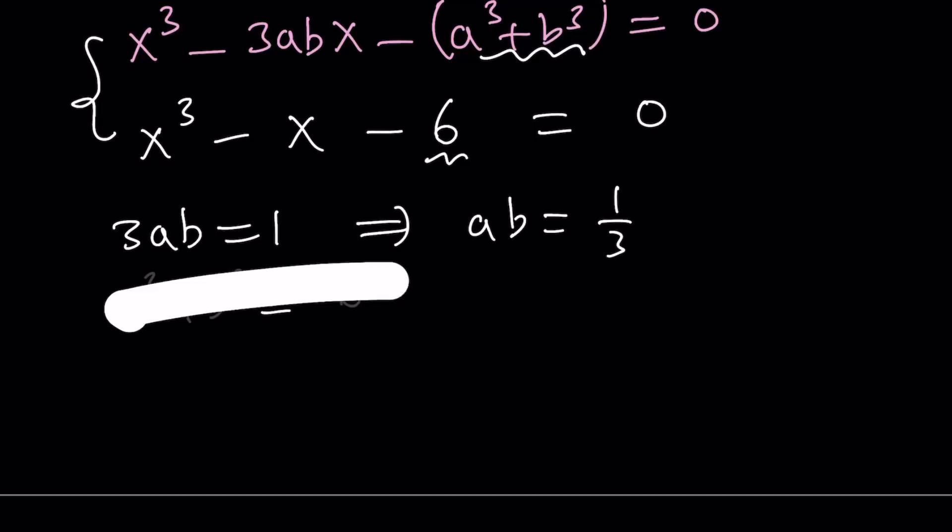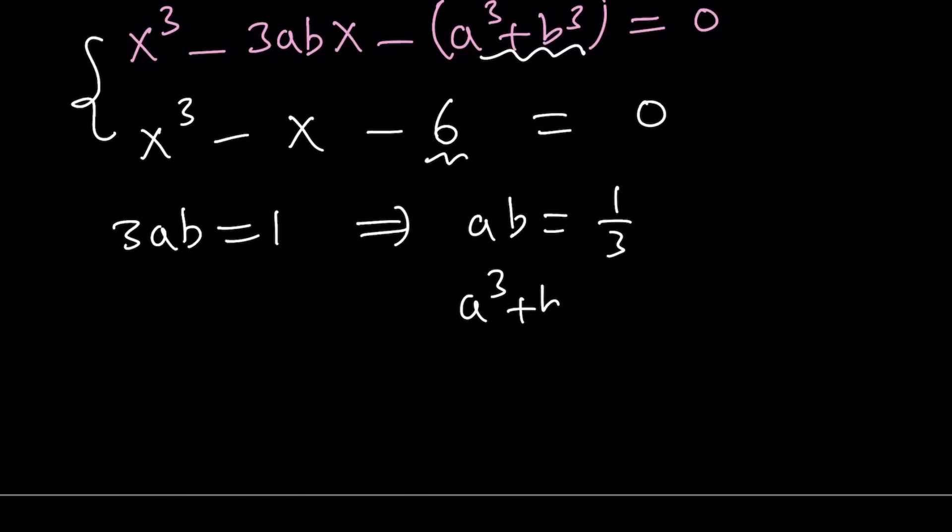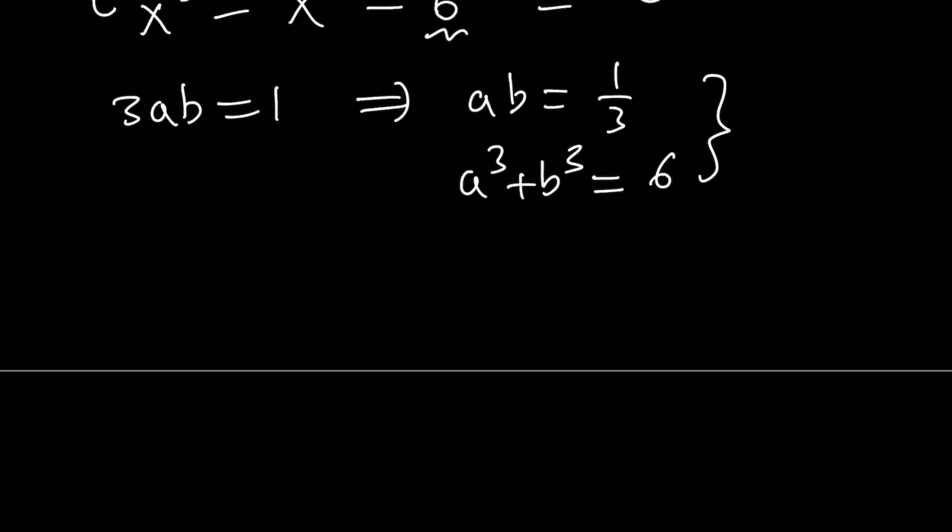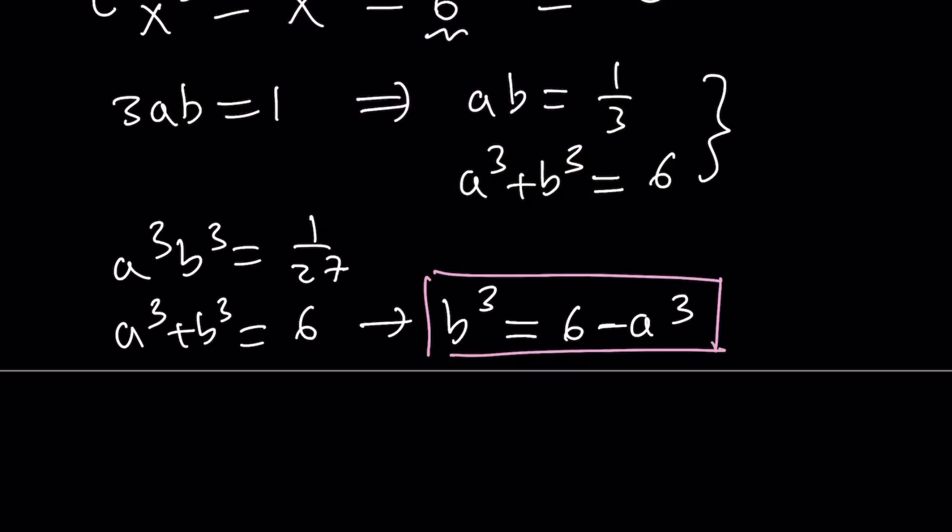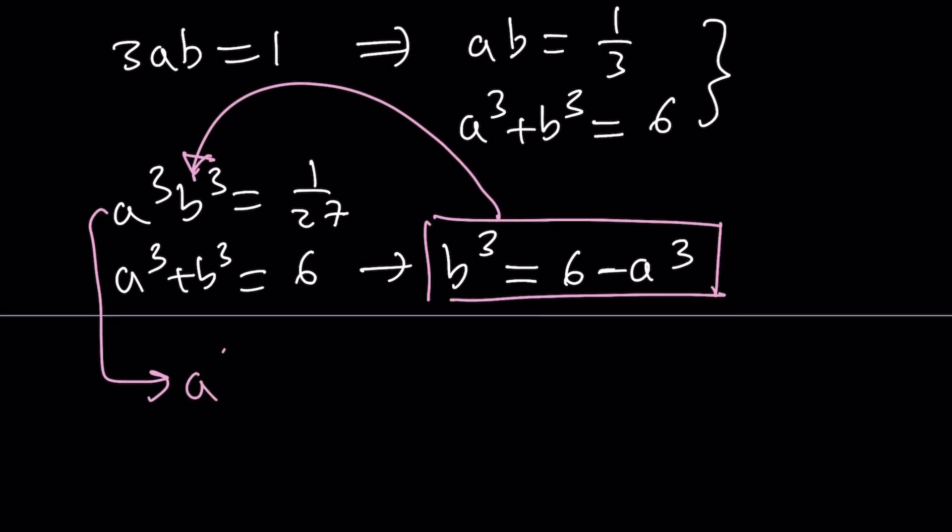So I have a system that looks like a cubic system, but in fact, it is quadratic. Why? You'll see why in a little bit. Now, if I cube both sides in the first equation, I get a³b³ equals 1 over 27. And then the second equation stays as is. Notice that I can isolate from one of the equations. I can isolate b³ and write it as 6 minus a³. This is going to be critical in solving our system. Let's go ahead and substitute that here. And we're going to get a quadratic equation from here.